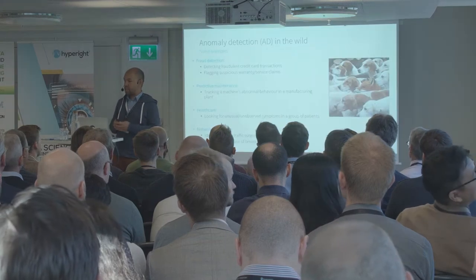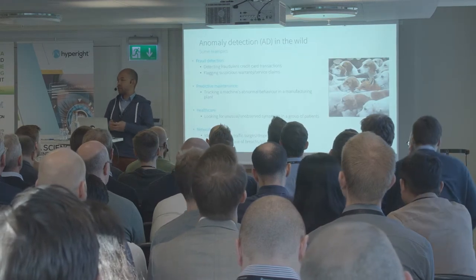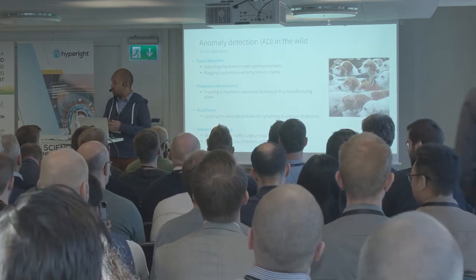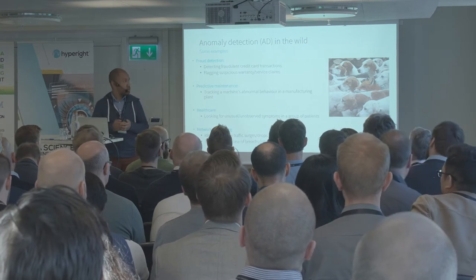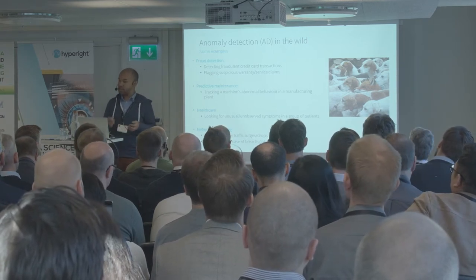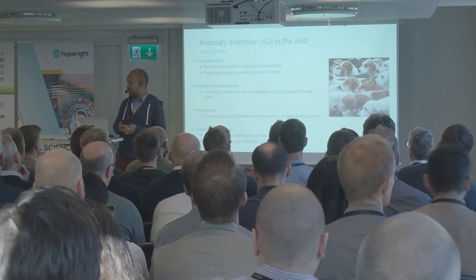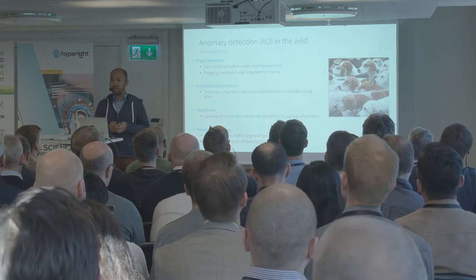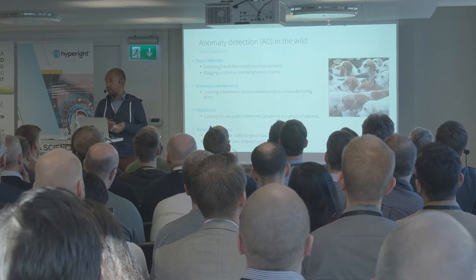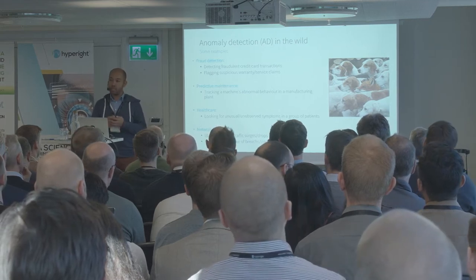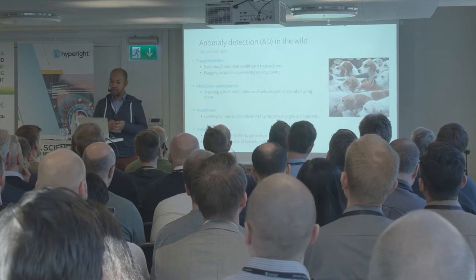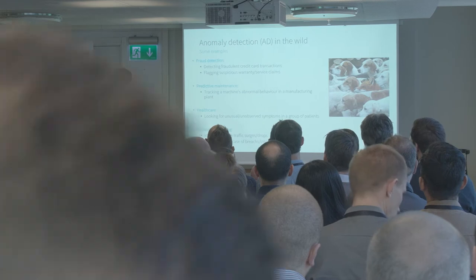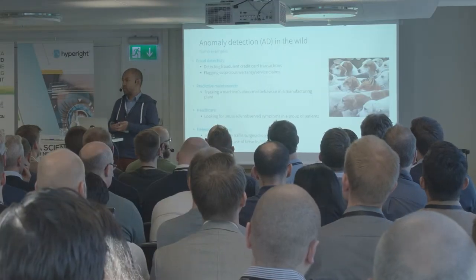Before delving into the details, a first explanation about where do you encounter anomaly detection. Basically, you can meet all those problems pretty much everywhere. The most common examples: the classical fraud detection problem — you want to flag fraudulent transactions or fraudulent claims. Predictive maintenance, if you want to check whether or not your manufacturing plant is running well. Healthcare, if you want to monitor patients and see whether they're showing weird symptoms during a treatment.